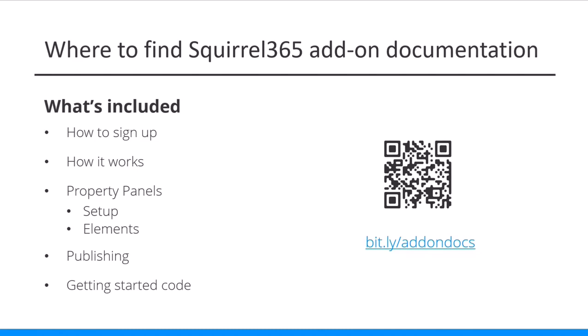There's another section on publishing — when you come to publish your add-on, there are a few things you need to do to put it into the marketplace: some text about what you need, an icon that will be available inside Squirrel when people add the component to their project, and some other bits and pieces. There's documentation to cover all of that. And then there's some getting-started code so you're not starting with a blank sheet — you've got some actual code to get you started.